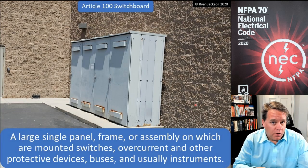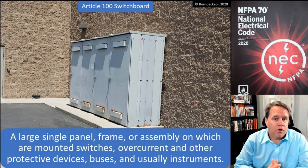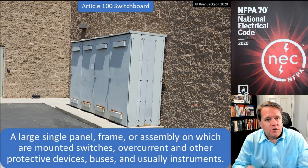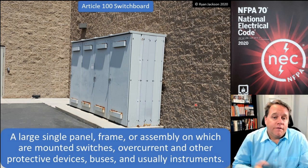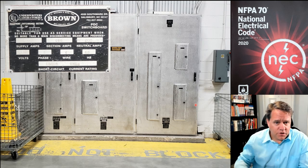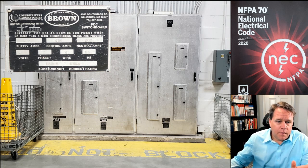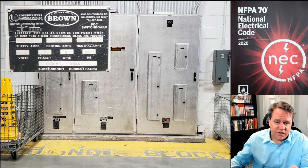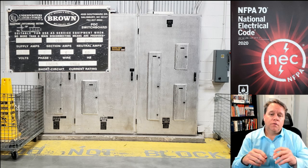So a panel board is a single panel installed in a cabinet or cutout box. A switchboard is bigger, generally speaking — it's a large single panel, frame, or assembly on which are mounted switches, overcurrent and other protective devices, buses, and usually instruments. What we're looking at in this photograph is a switchboard. Here's another example — if you squint you can read that it says 'dead front switchboard, section one of three,' so those three sections together create a switchboard.